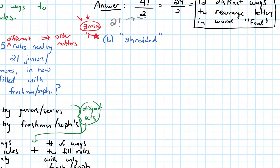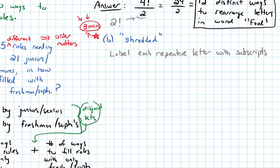Just like we did before, let's think about what happens if we label each repeated letter with subscripts. We have S, H, R, and then two different E's — label them E1 and E2. Then for the D's, label them with subscripts: D1, D2, and D3. There are three D's.